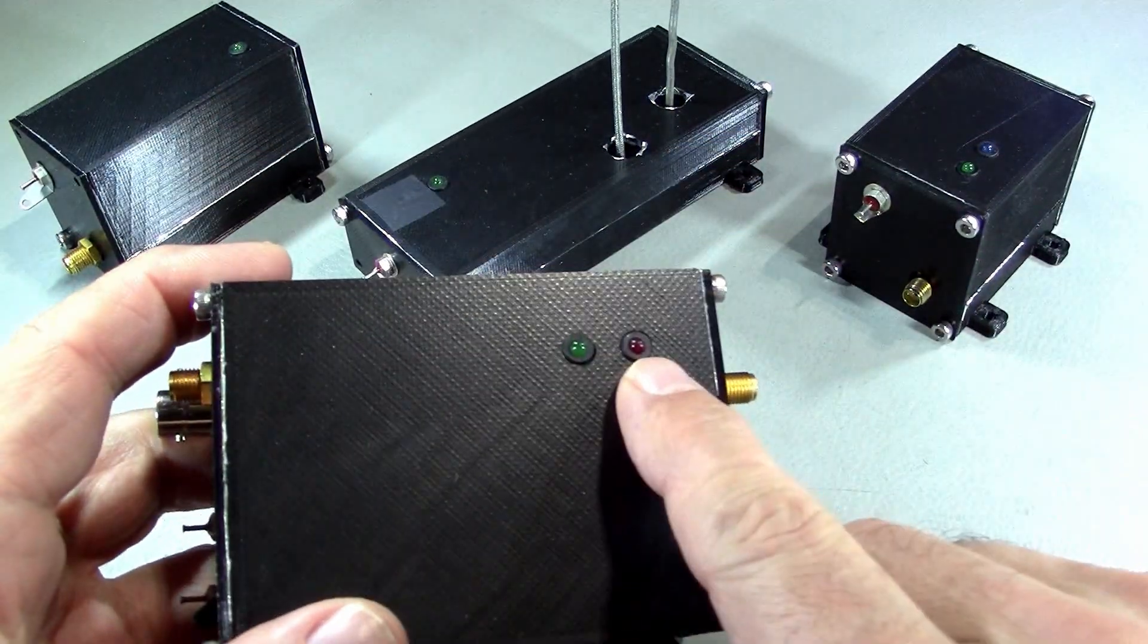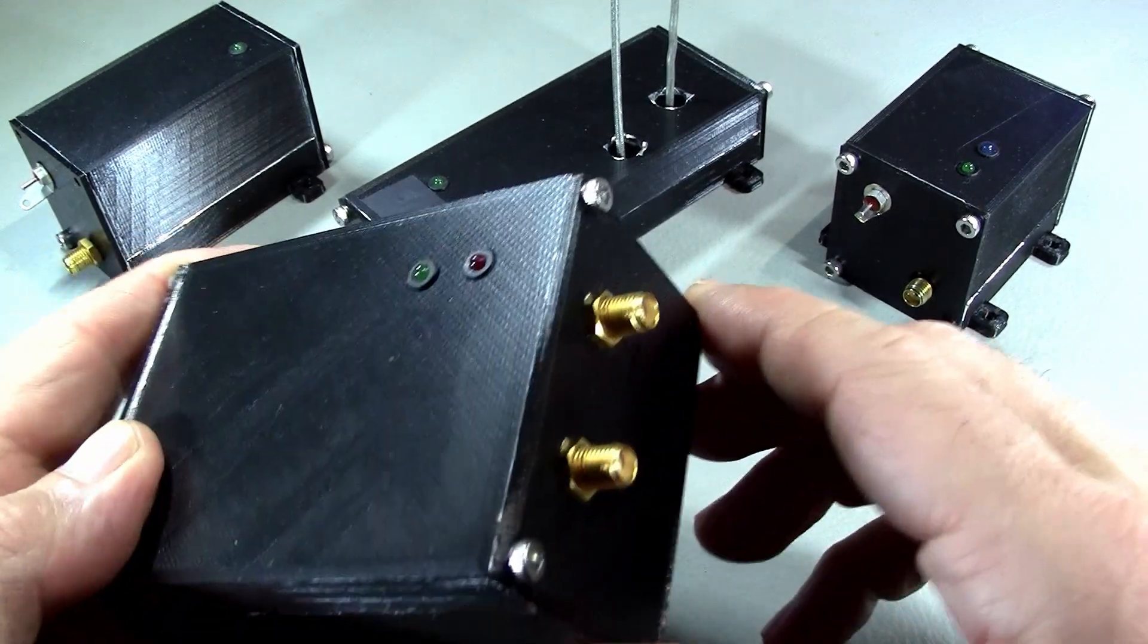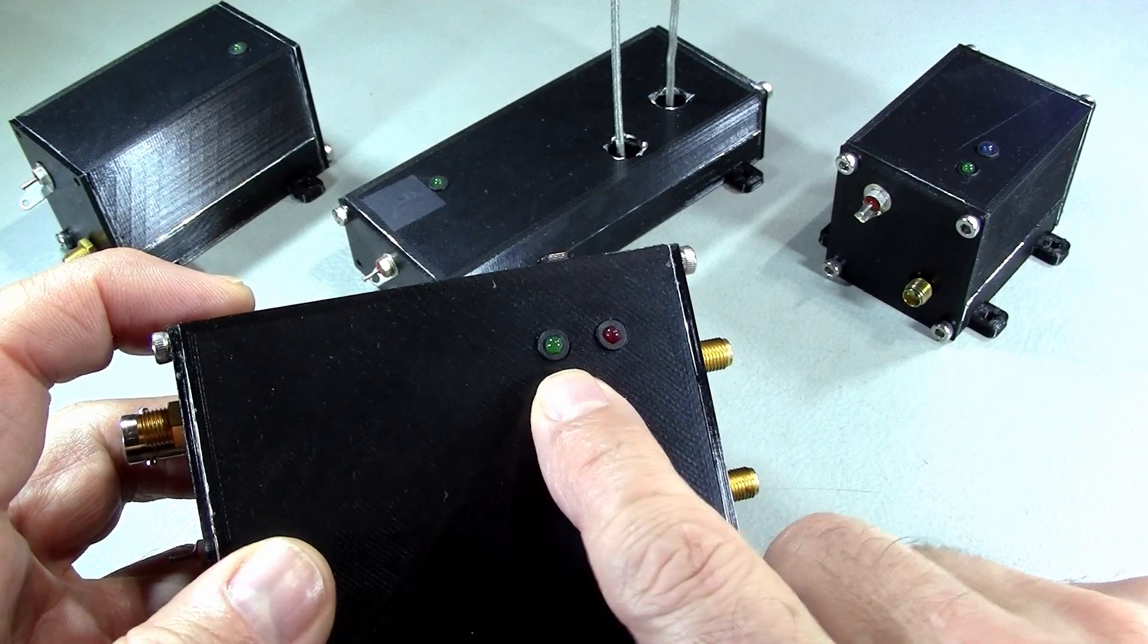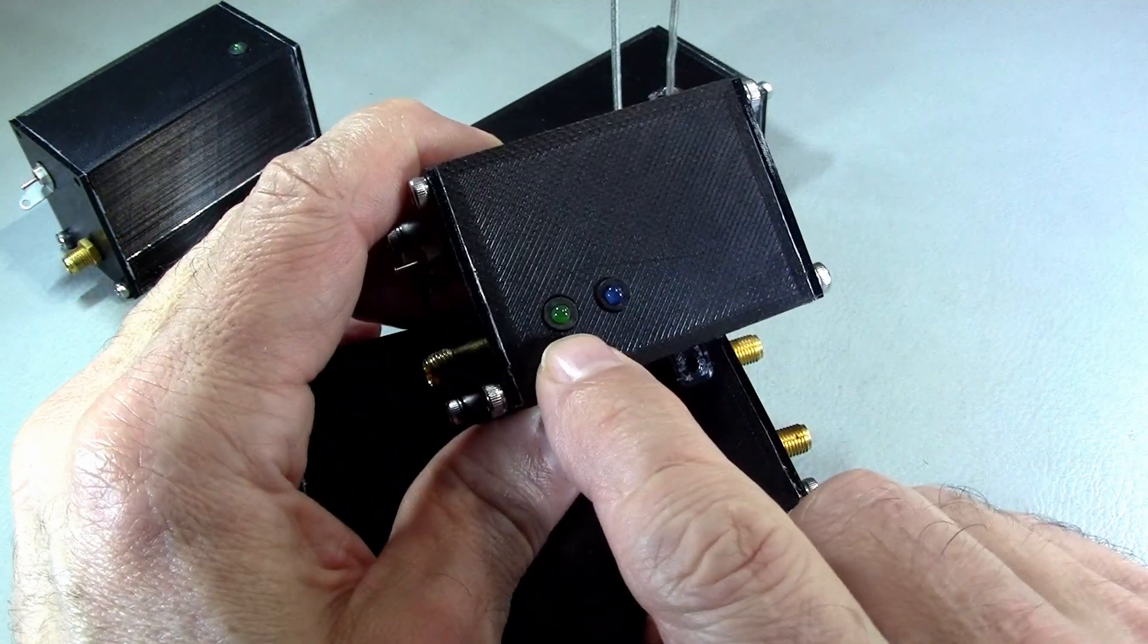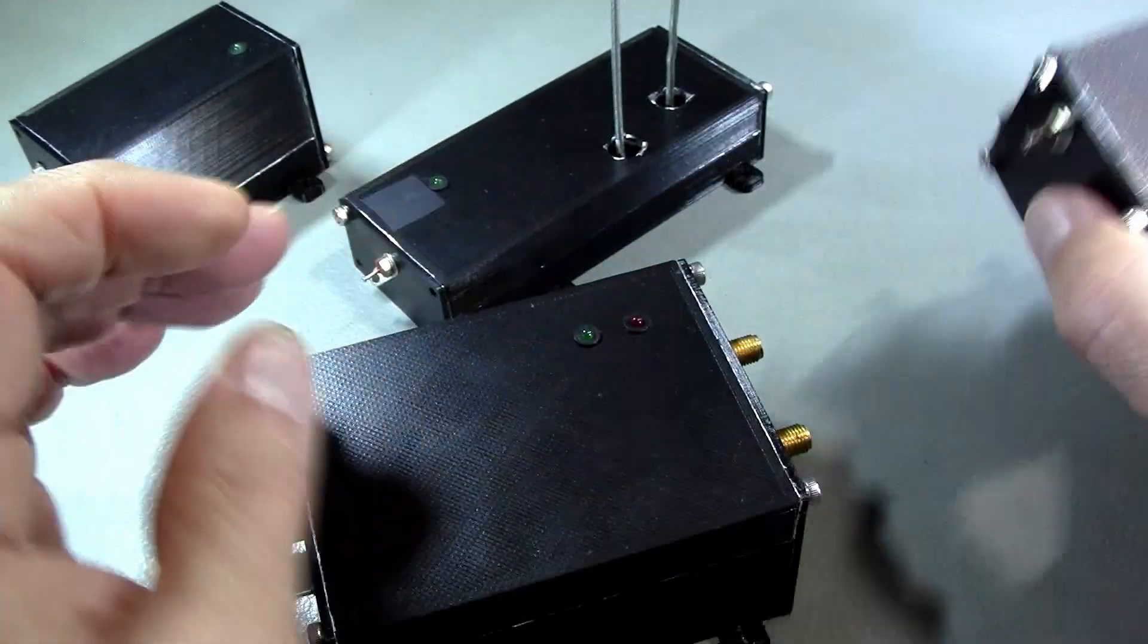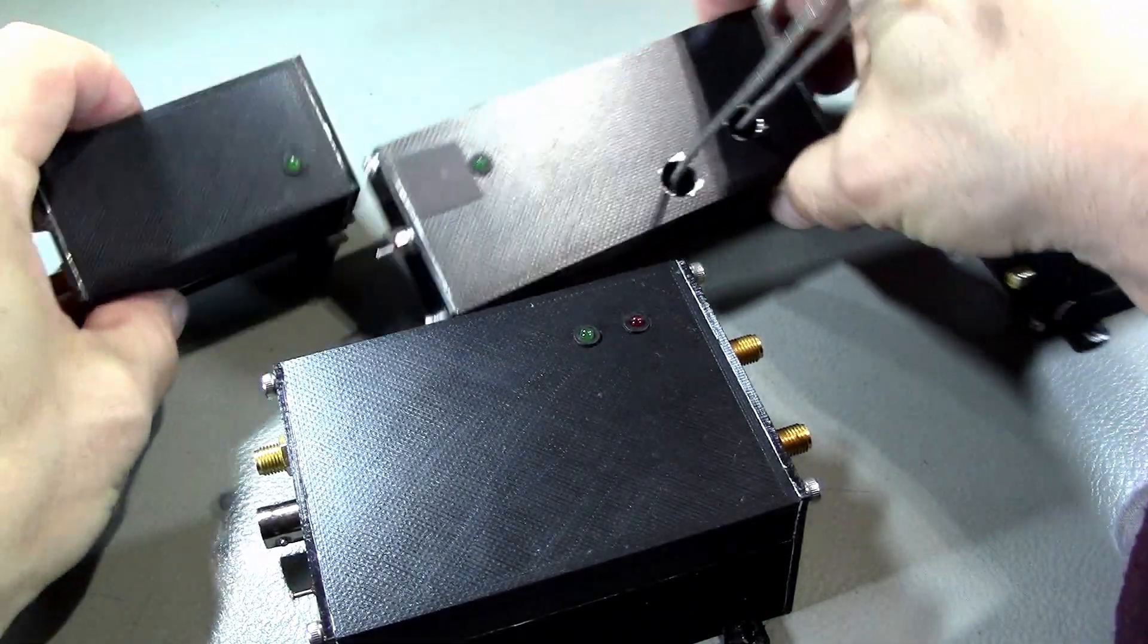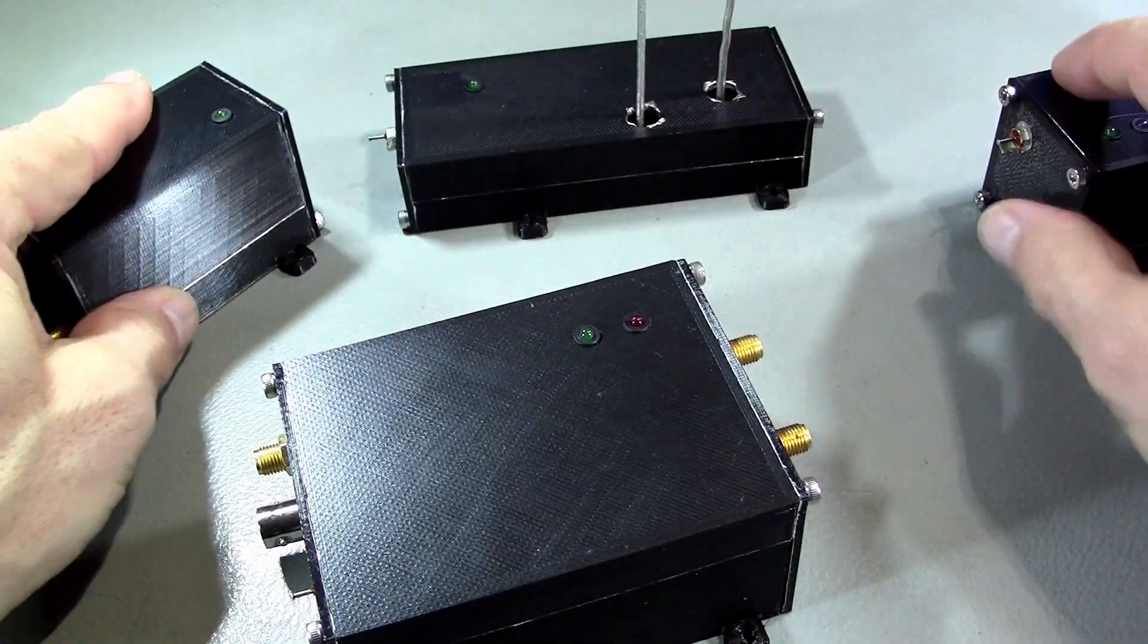And another thing I've decided to do is add LEDs. So in the case of the transverter, one for transmit, one for receive, and for the synthesizer, one for power on and one for synthesizer in lock, PLL in lock. And the other two have power on, so you know they're fed with power when the LED is on.